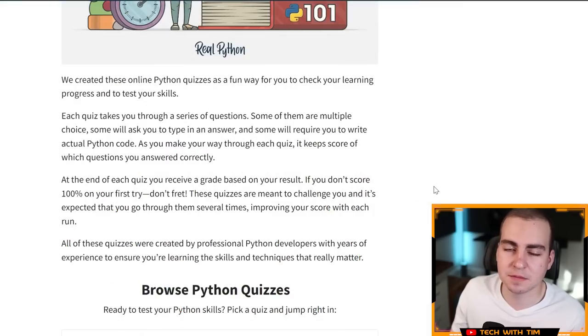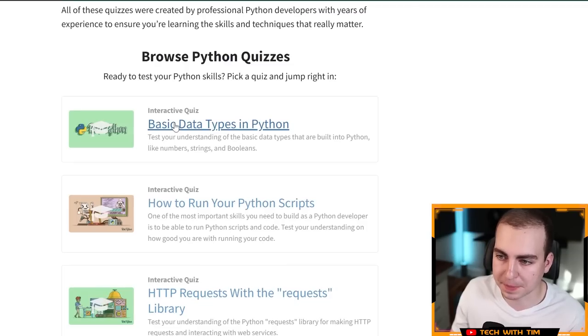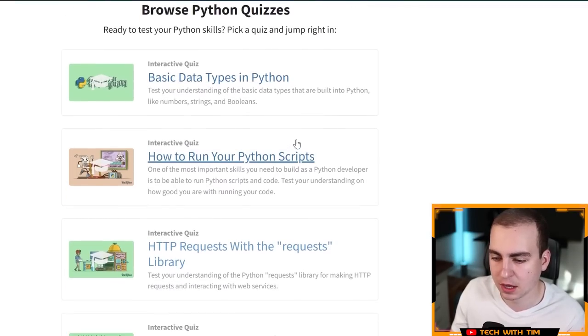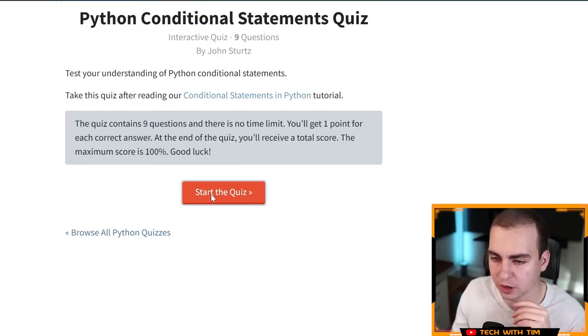All right, guys. So I'm back to the main page here. I'm not going to lie. That was really hard. I thought these were going to be easier, especially because it says basic data types. And that was like really obscure and like specific stuff that you're probably never going to have to know. I was looking through here. There's a few, Python dictionaries looks decent. I clicked on it just to see Python, conditional statements. Let's just do conditional statements here and see nine questions.